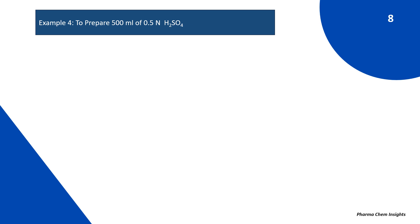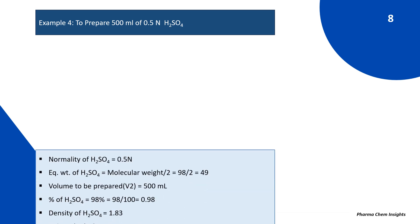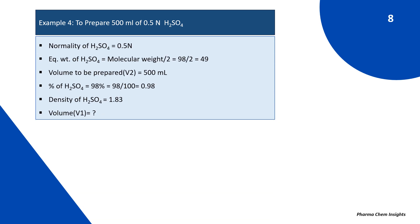Example 4: To prepare 500 ml of 0.5 normal H₂SO₄. Data: normality of H₂SO₄ is 0.5 normal. Equivalent weight = molecular weight ÷ 2 = 98 ÷ 2 = 49, since the number of replaceable H⁺ ions is 2. Volume to be prepared V2 = 500 ml. Percentage of H₂SO₄ is 98%, which equals 0.98. Density of H₂SO₄ is 1.83 — both found on the bottle label.